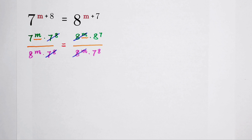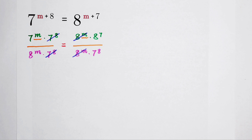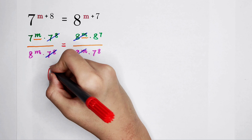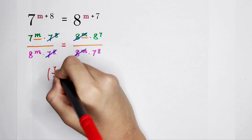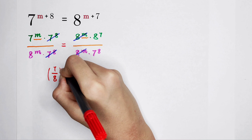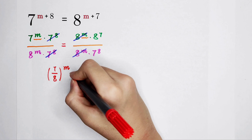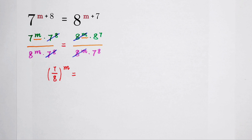Now, what's on the left-hand side? 7 to the power of m divided by 8 to the power of m — of course, it can be written as 7 over 8, all to the power of m. This you should know.